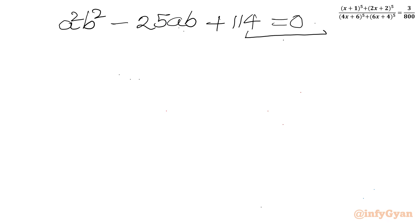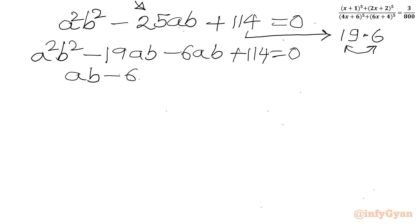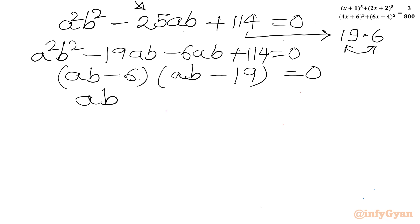Now we can see the factors of 114. We can write 19 times 6 equals 114. If we add these two, we get 25, which is our middle term coefficient. So we split minus 25ab as minus 19ab minus 6ab, giving us (ab minus 6)(ab minus 19) equal to 0. From the product-zero root we get ab equal to 6 or ab equal to 19.